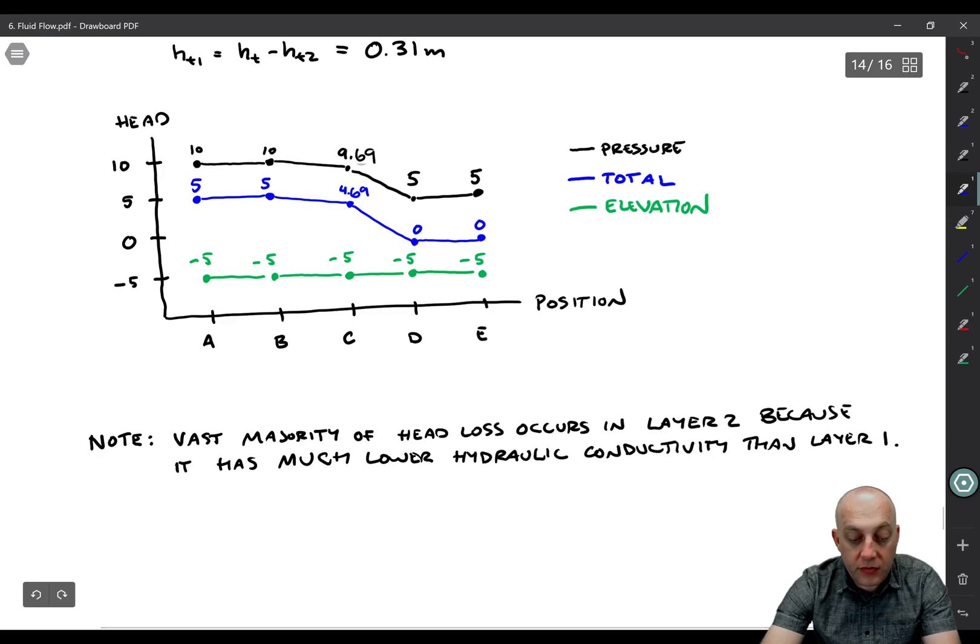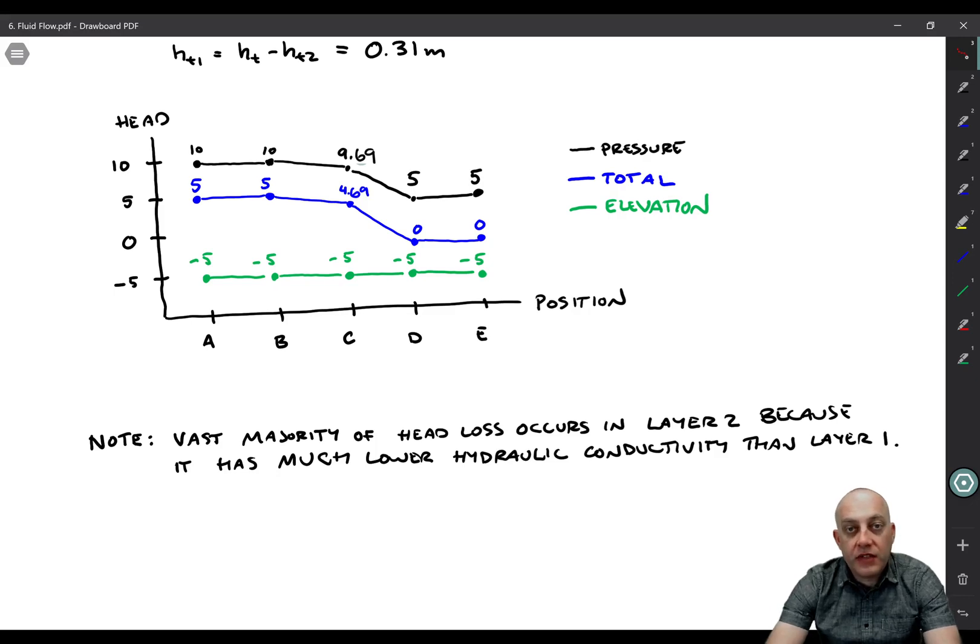Okay, now one final note here. The vast majority of the head loss occurs in layer 2. There's a huge drop here within layer 2, not much of a drop within layer 1. And the reason is that layer 2 has a much lower hydraulic conductivity. So if you have two layers that are relatively the same thickness, much more of a head loss will happen in the low permeability layer than in the high permeability layer. Which makes sense, right? There's more drag as you're trying to force water through a soil with low permeability.